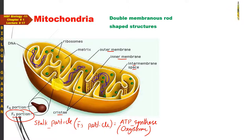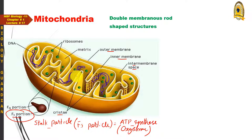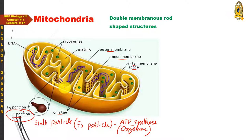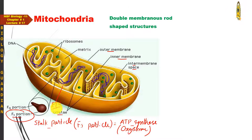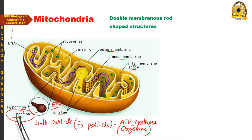While the inner mitochondrial membrane has Stalk particles, the outer membrane has none. In addition to these particles, the inner mitochondrial membrane also contains several enzyme complexes which participate in the electron transport chain (ETC). These electron transport carriers collectively form the ETC and participate in ATP synthesis via chemiosmosis during respiration.